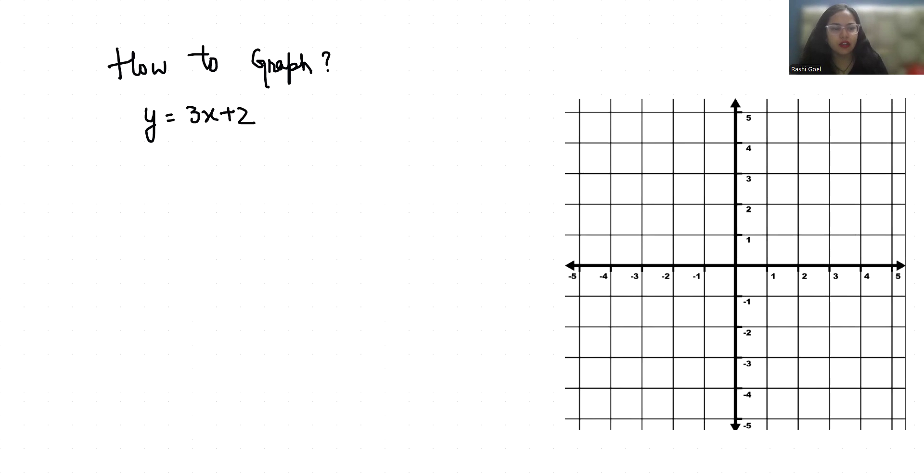First we are going to find the coordinates of x and y by putting the value of x to find y. If I put x is 0, then 3 times 0 plus 2, so 0 plus 2, that is 2.